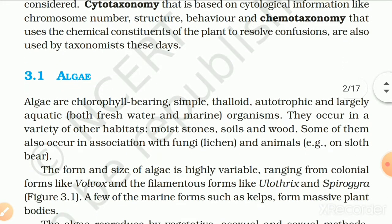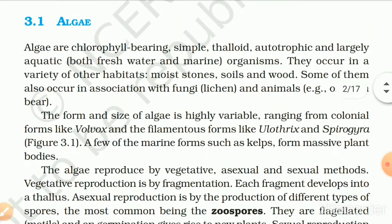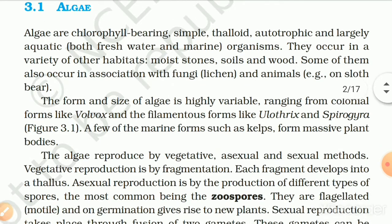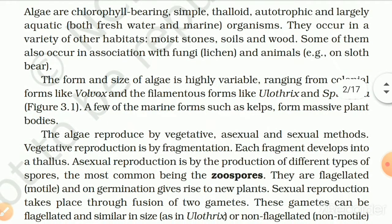3.1 Algae. Algae are chlorophyll-bearing, simple, thaloid, autotrophic and largely aquatic — both freshwater and marine — organisms. They occur in a variety of other habitats such as moist stones, soils and wood. Some also occur in association with fungi in lichens and with animals such as the sloth bear. The form and size of algae is highly variable, ranging from colonial forms like Volvox and filamentous forms like Ulothrix and Spirogyra.